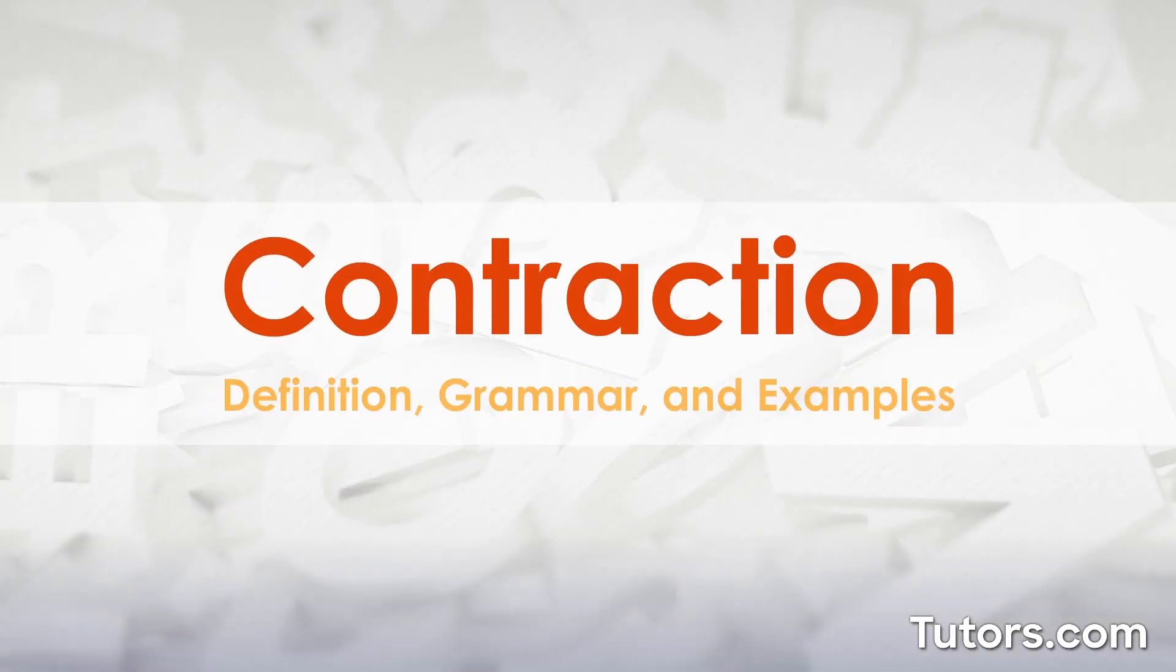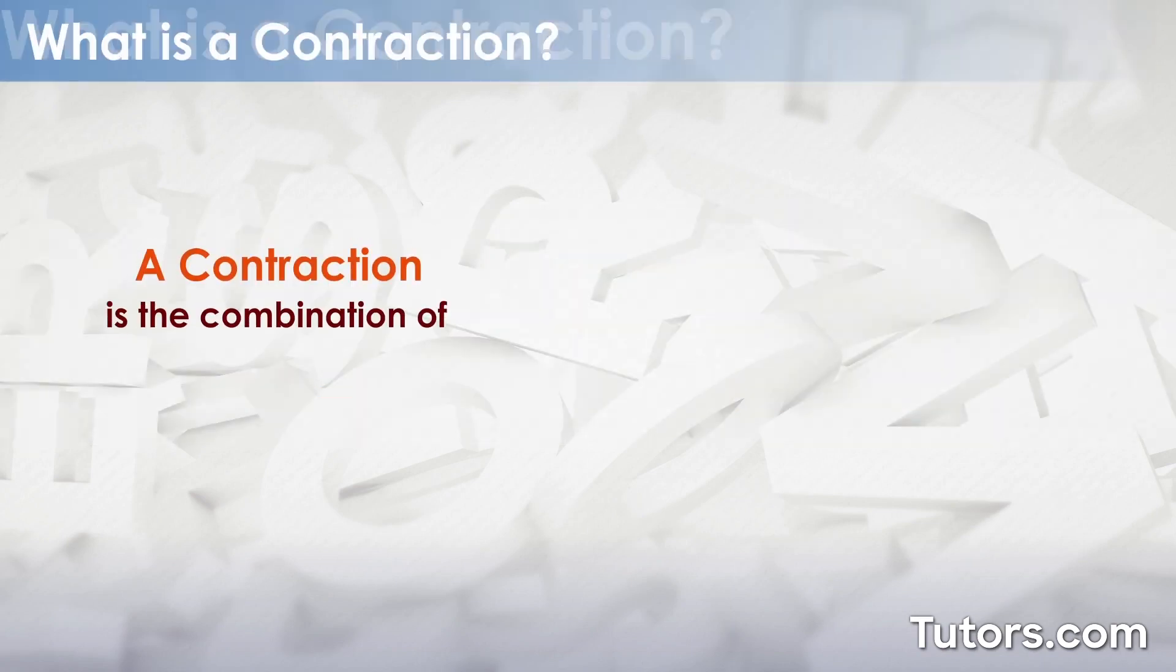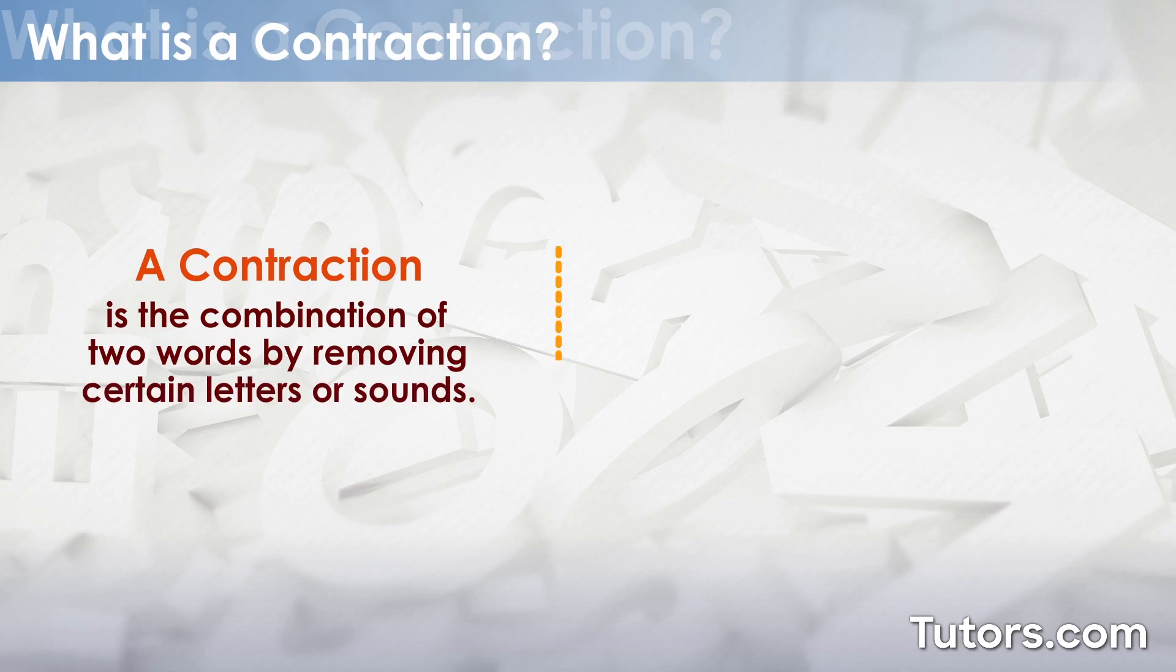What is a contraction? A contraction is the combination of two words by removing certain letters or sounds. Most contractions include an apostrophe in place of the missing letter or letters when the two words are combined.